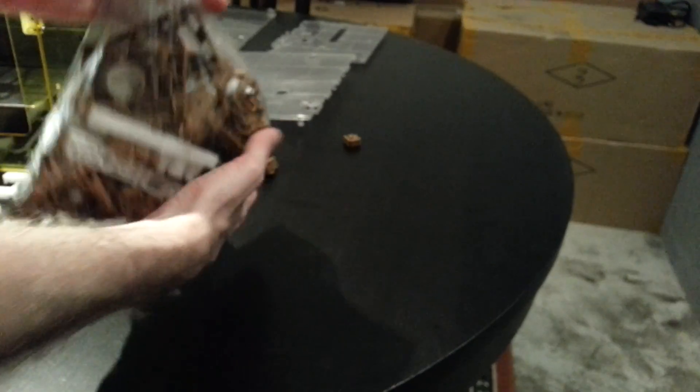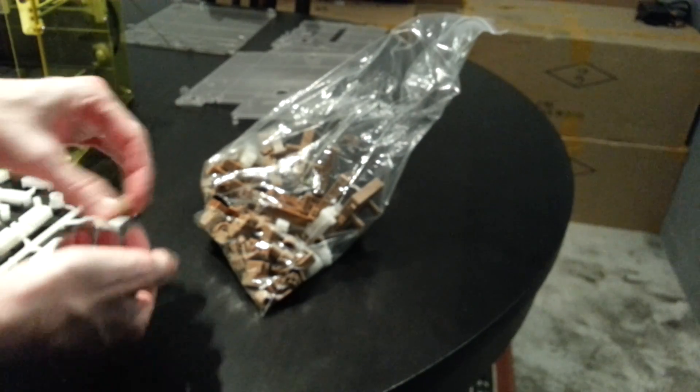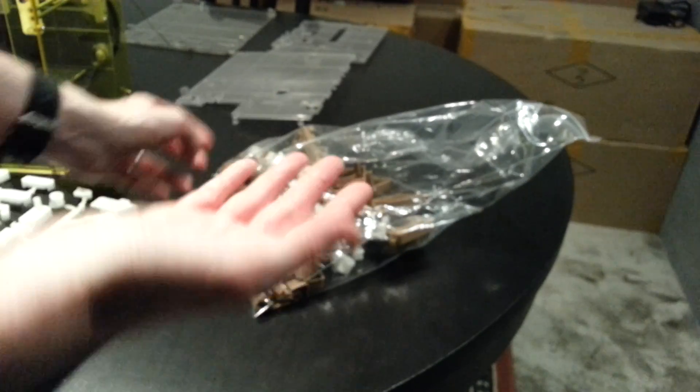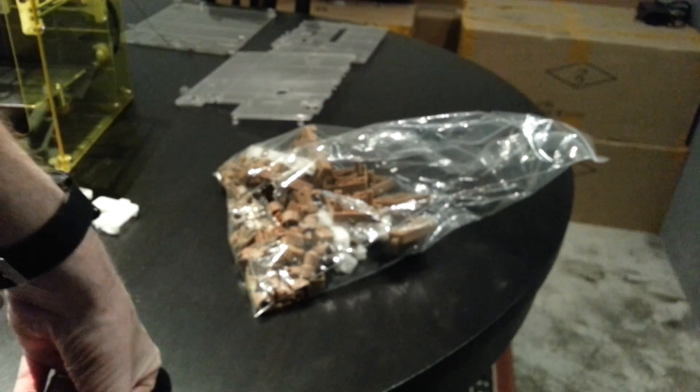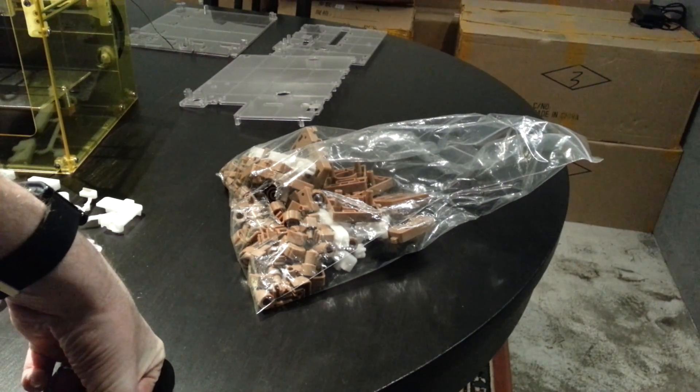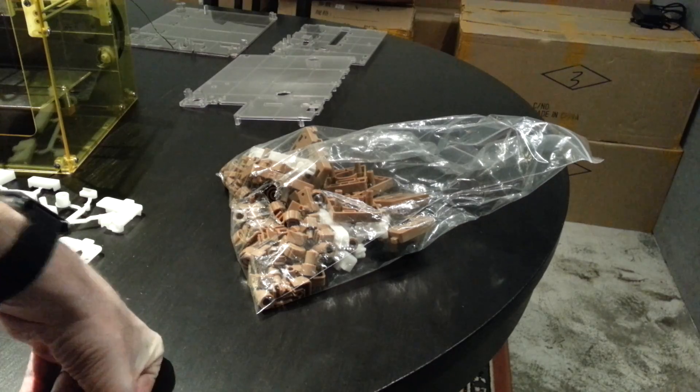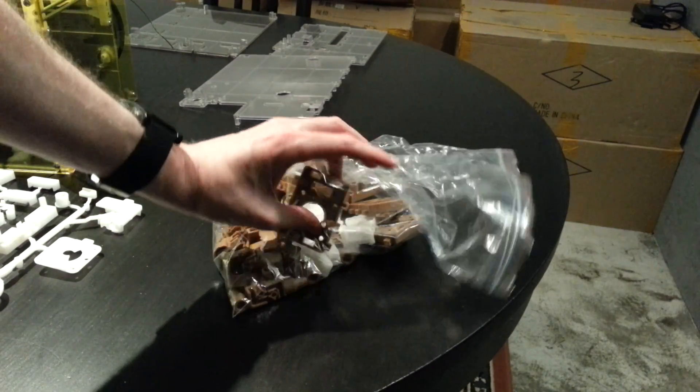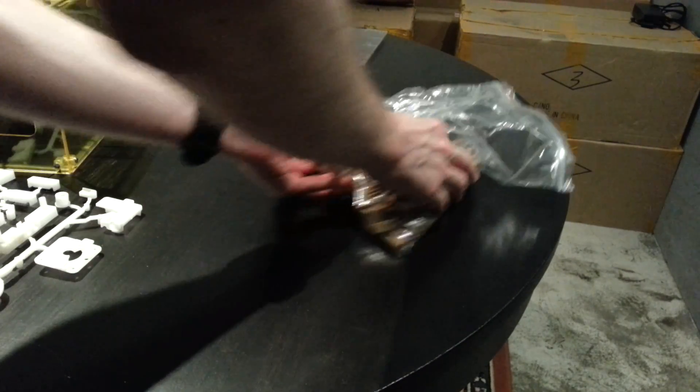Taking all the ABS. Now keep in mind these are Pre-Production so the colors are not actually something that we chose or anything like that. These are just whatever. Typically first shot parts are going to be just whatever they happen to have lying around. So we've got all the ABS parts. These brown ones are all the ABS parts that we're doing for a set.